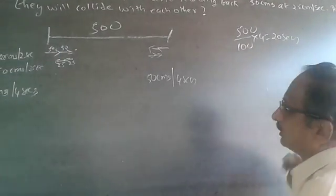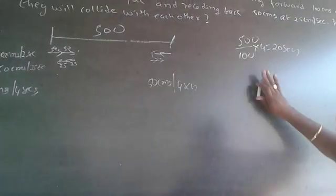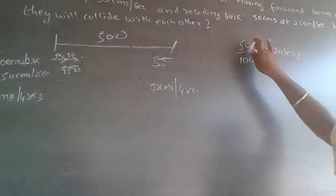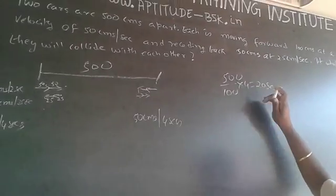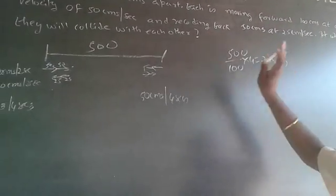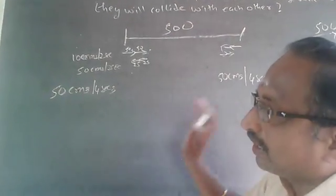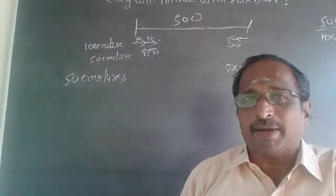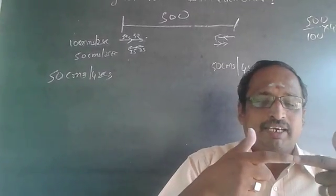Using the formula: 500 divided by 100, multiplied by 4, gives 20 seconds. But this can't be 20 seconds, because the car is moving forward and then receding back. Once there is a collision, there is no question of going backward or forward.